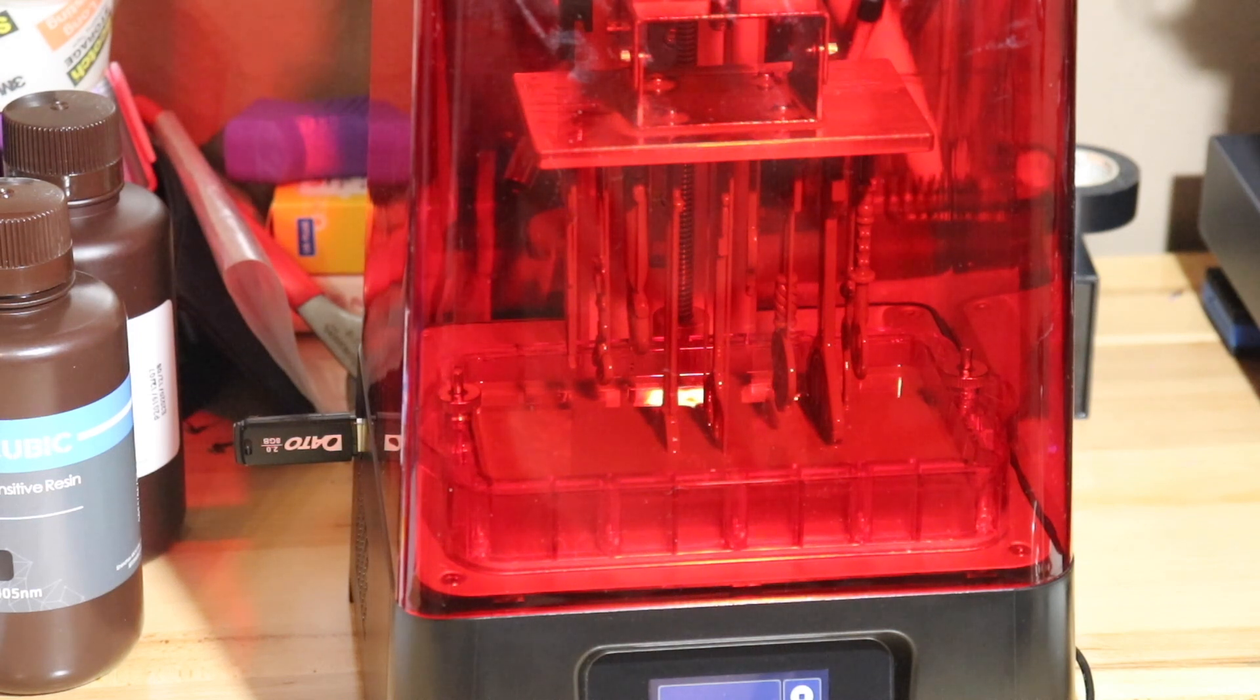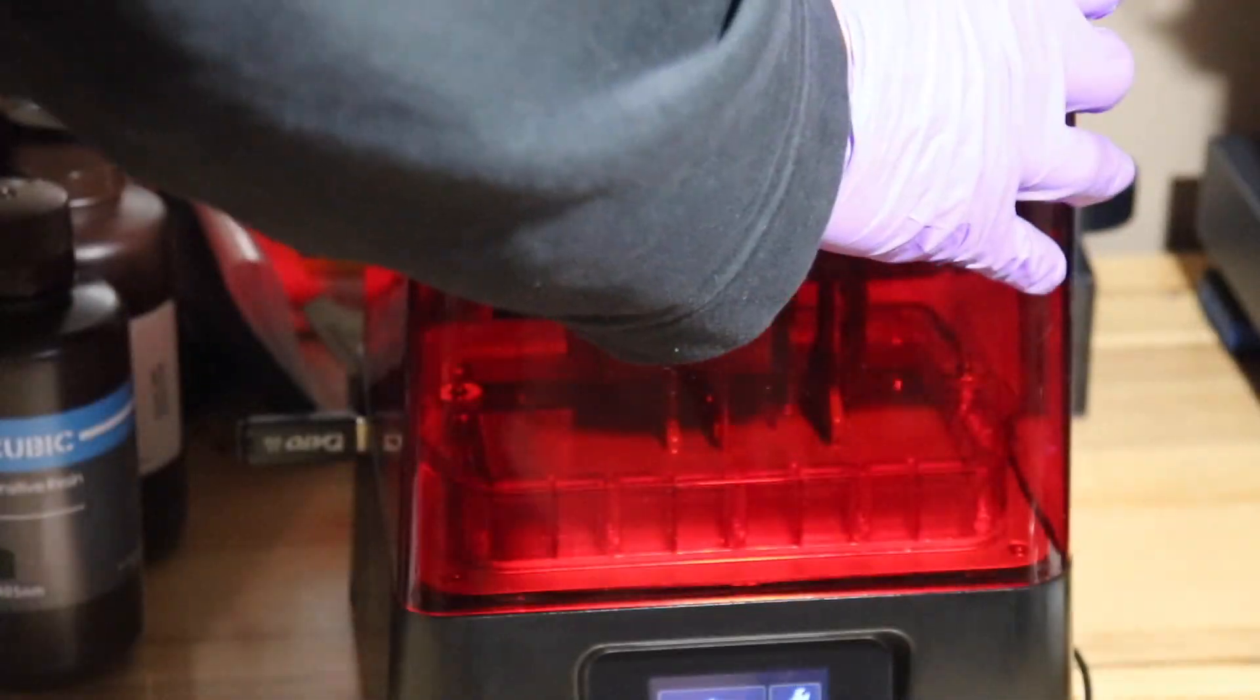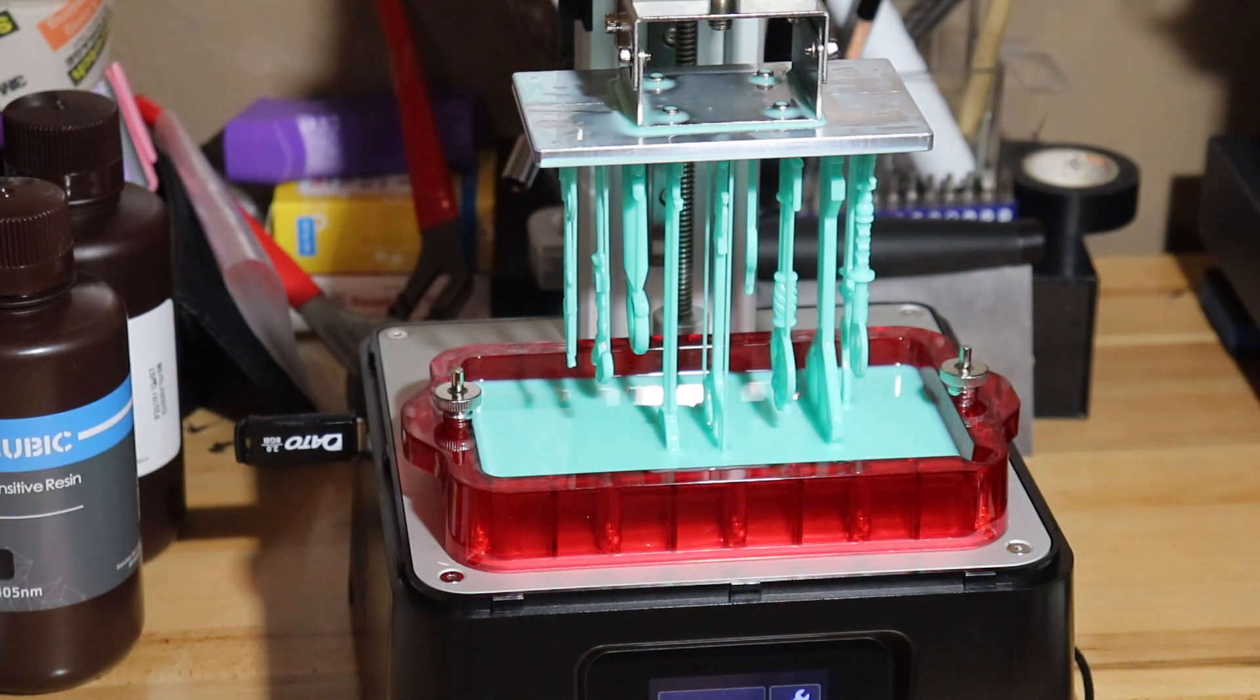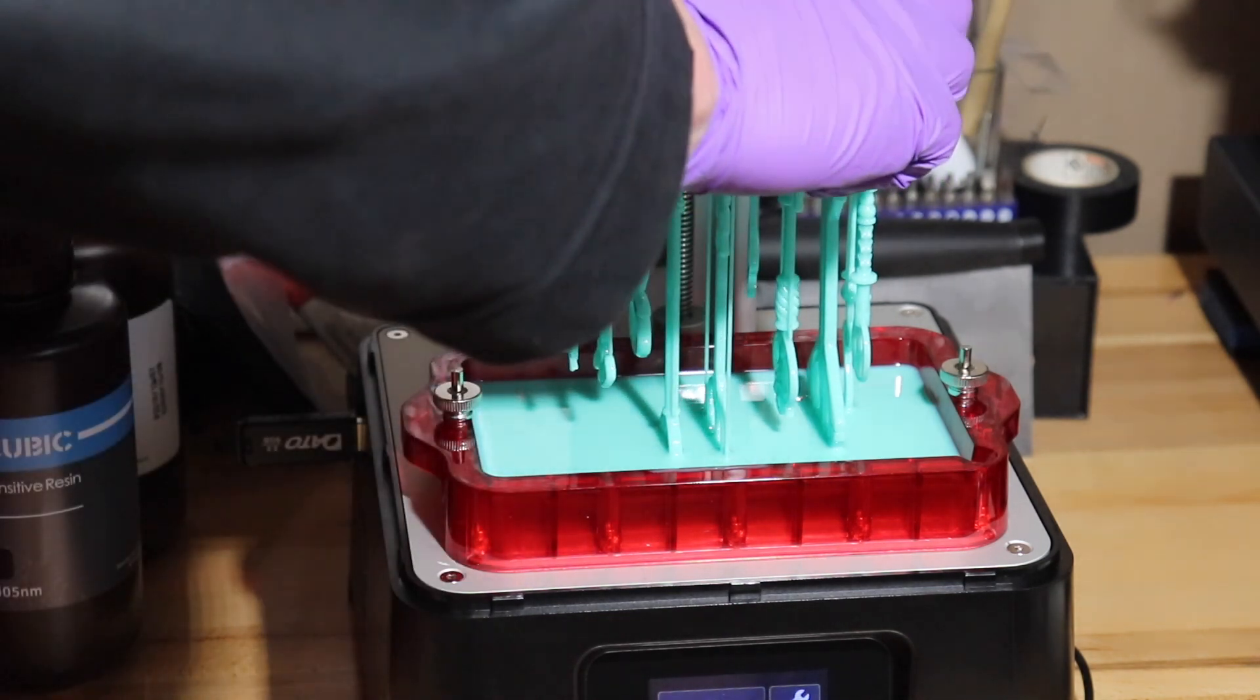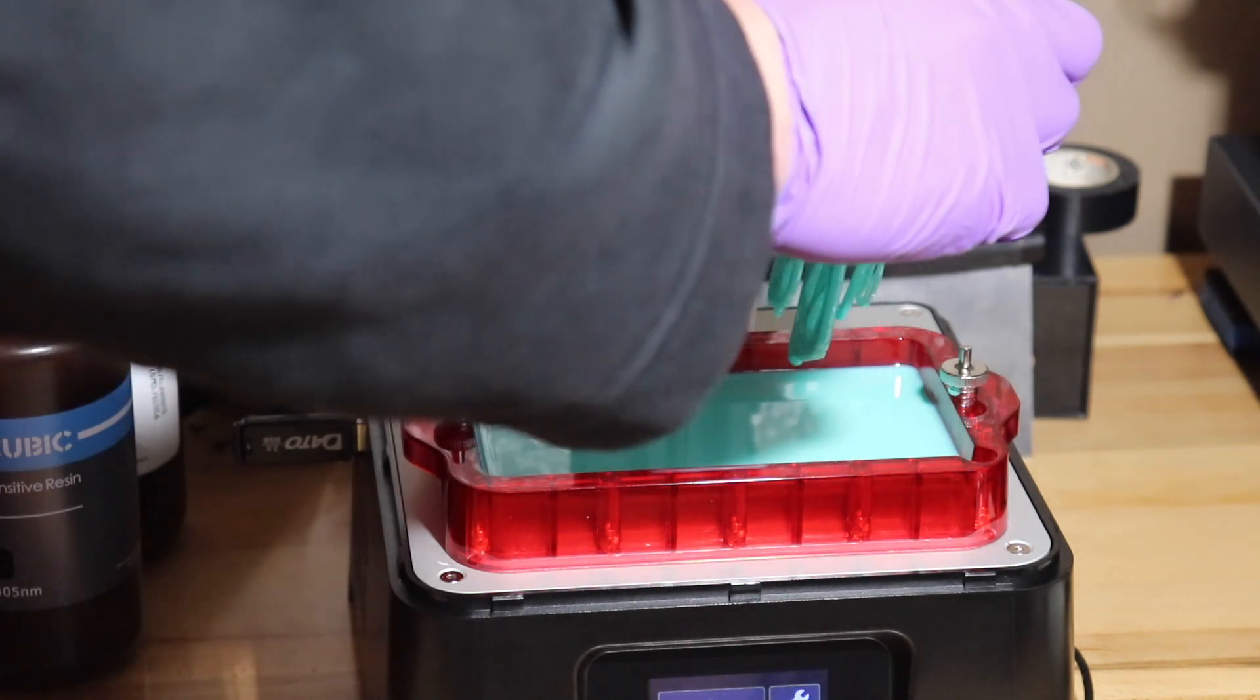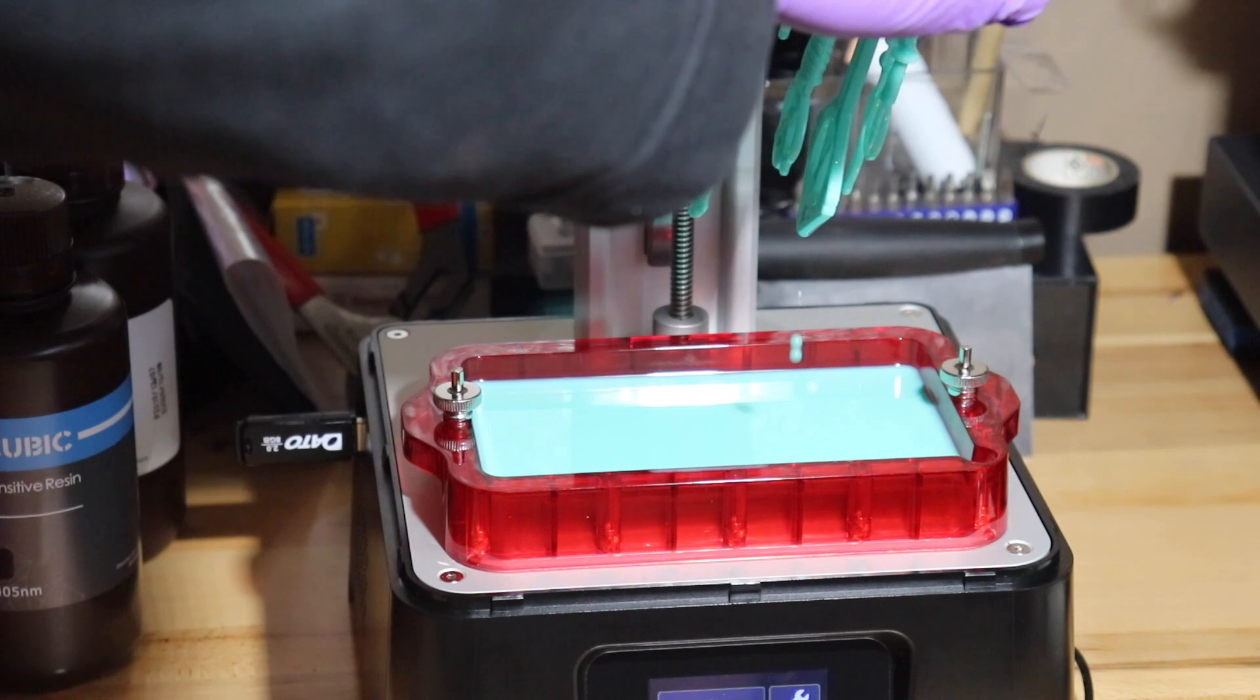Here it is - the lock and key set from the show Locke & Key on Netflix, with minimum supports. It came out very well. Here I am trying to fumble around and you'll see me spill some resin. The next print I do, you'll see coming up. I use the scraper - that's my trick now. Use the scraper on top of that build plate, and as it's printing and comes out of the resin, just scrape along and push the resin back into the vat and you won't have that issue.